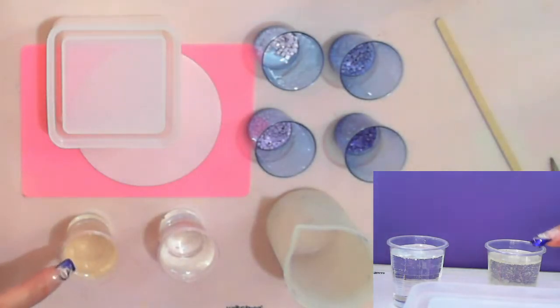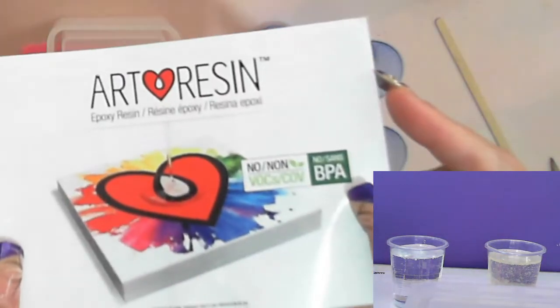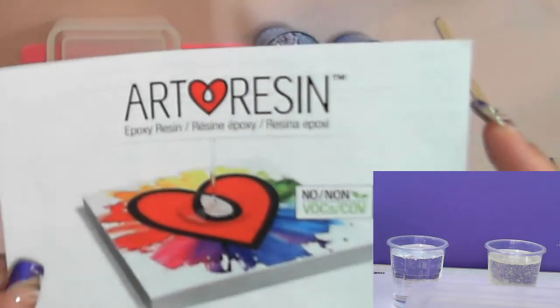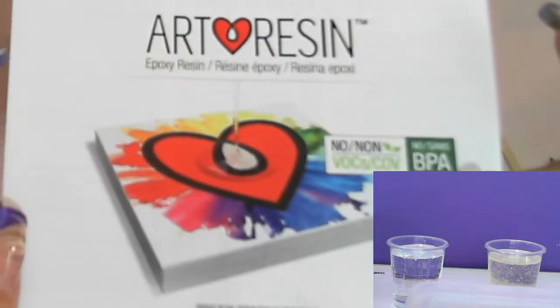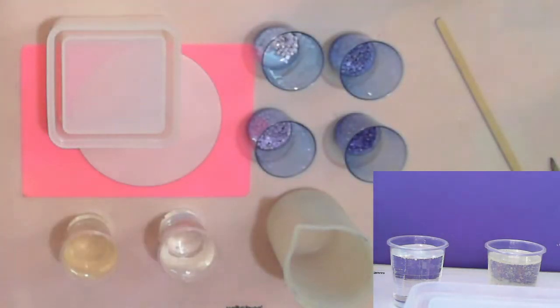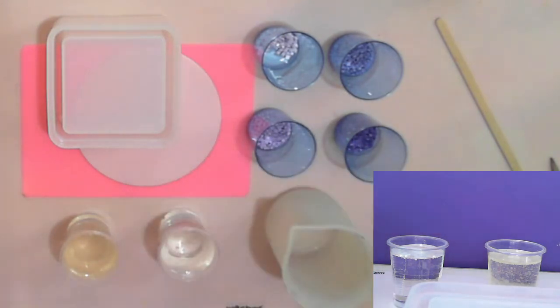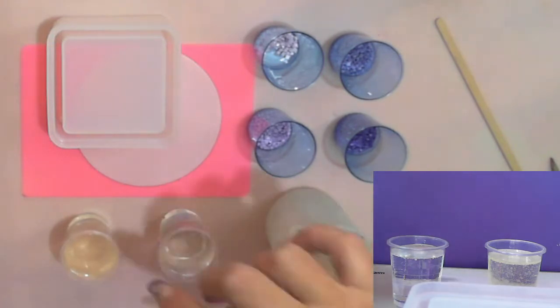So that's part B, that's part A. I am using art resin just for those of you that want to know what I am using. This is a two-part epoxy done by quantity not by weight. So I'll speed through this process and come back once I have mixed the resin.